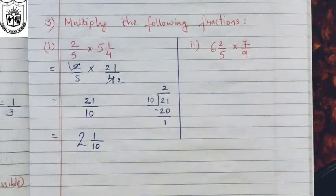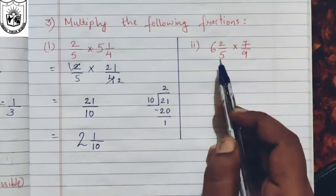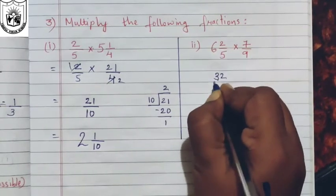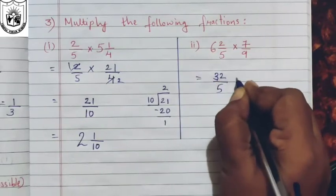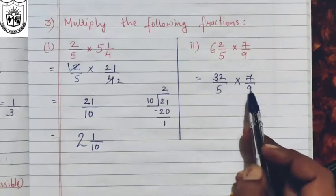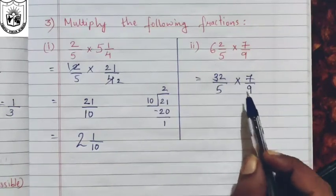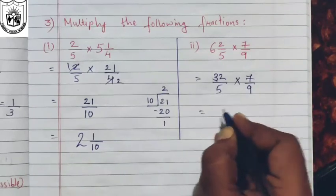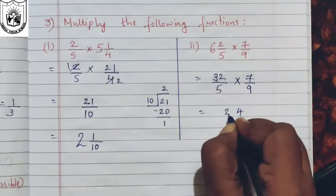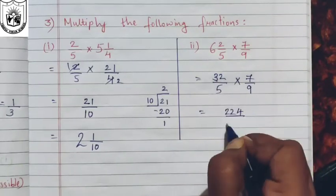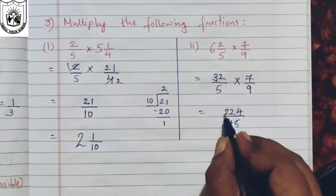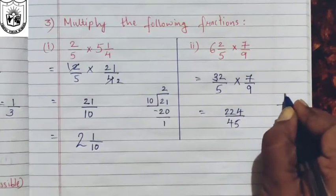Let us now solve the second one. Here the first number is a mixed fraction, so convert it: six times five are thirty plus two is thirty-two upon five, multiplied by seven upon nine. We do not have numbers with a common factor that can be cancelled, so we will multiply. That gives thirty-two times seven — which is two hundred and twenty-four — over five times nine, which is forty-five.